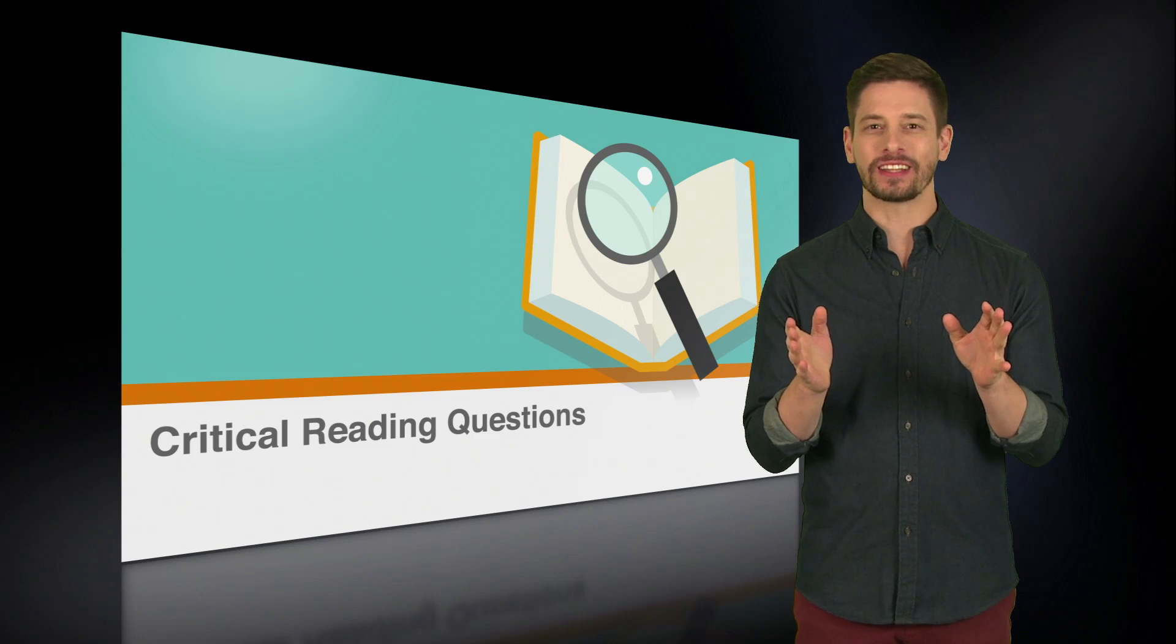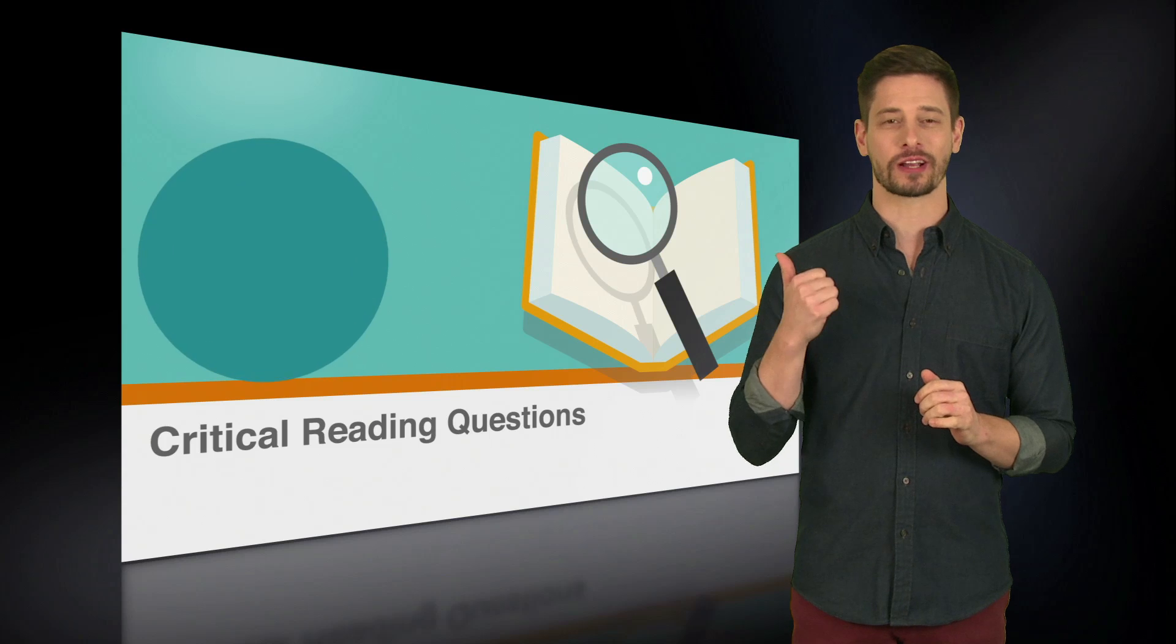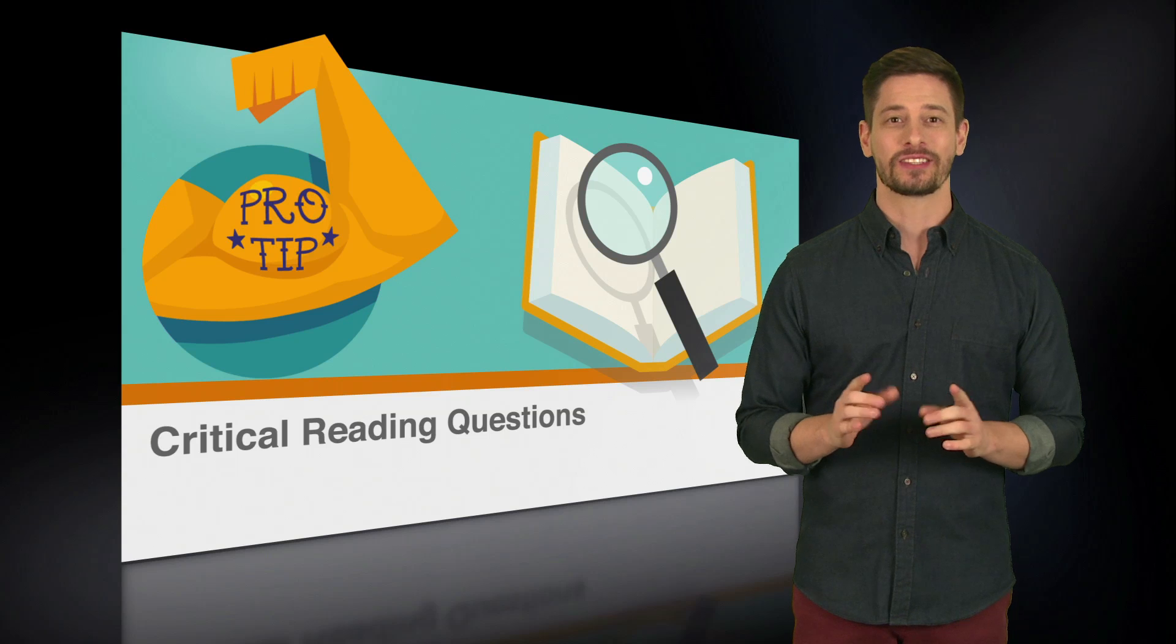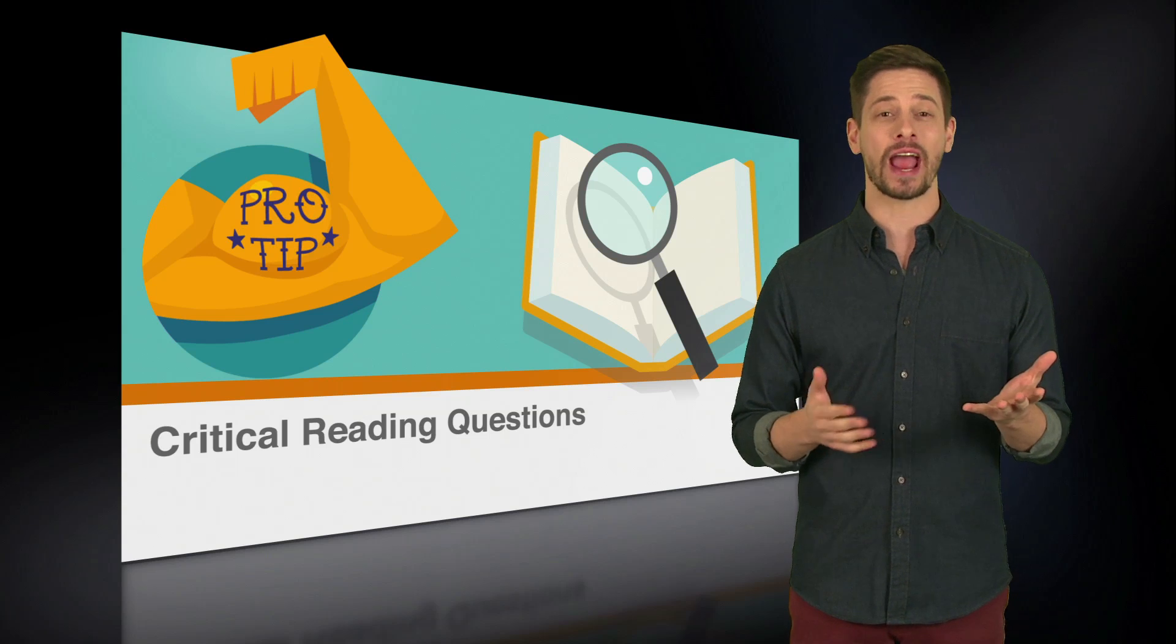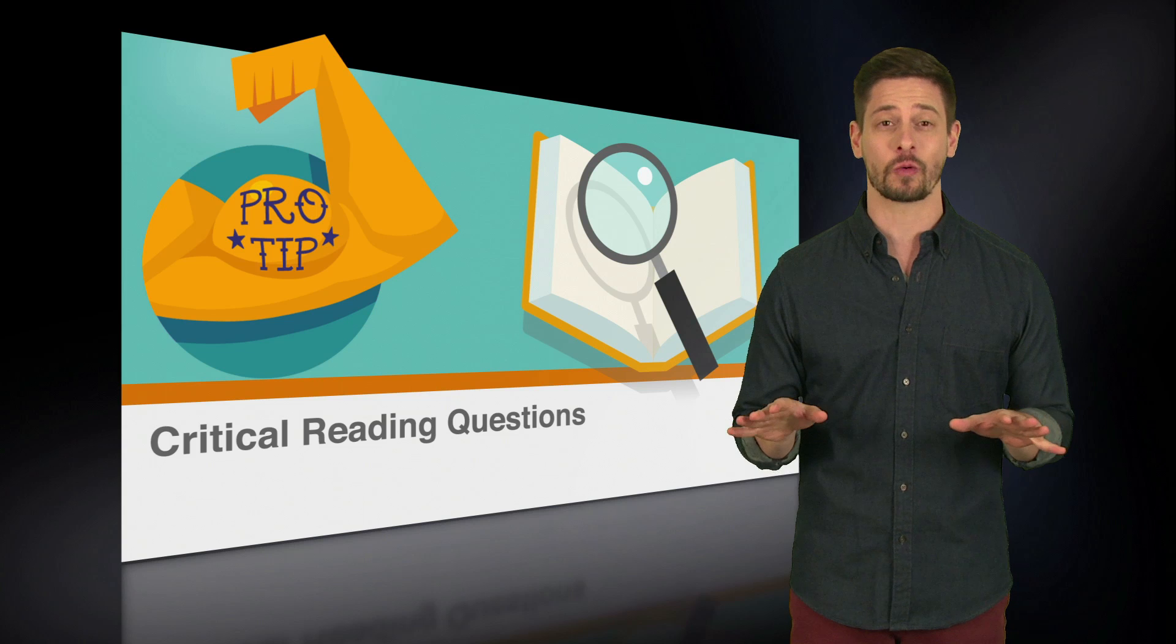Now that we know where to look, let's talk about what to look out for. And this brings us to our next pro tip. It's not enough for an answer to be true. It also needs to be correct. Some answer choices will be both true and wrong. True statements that have nothing to do with the passage, the question, or the correct answer.